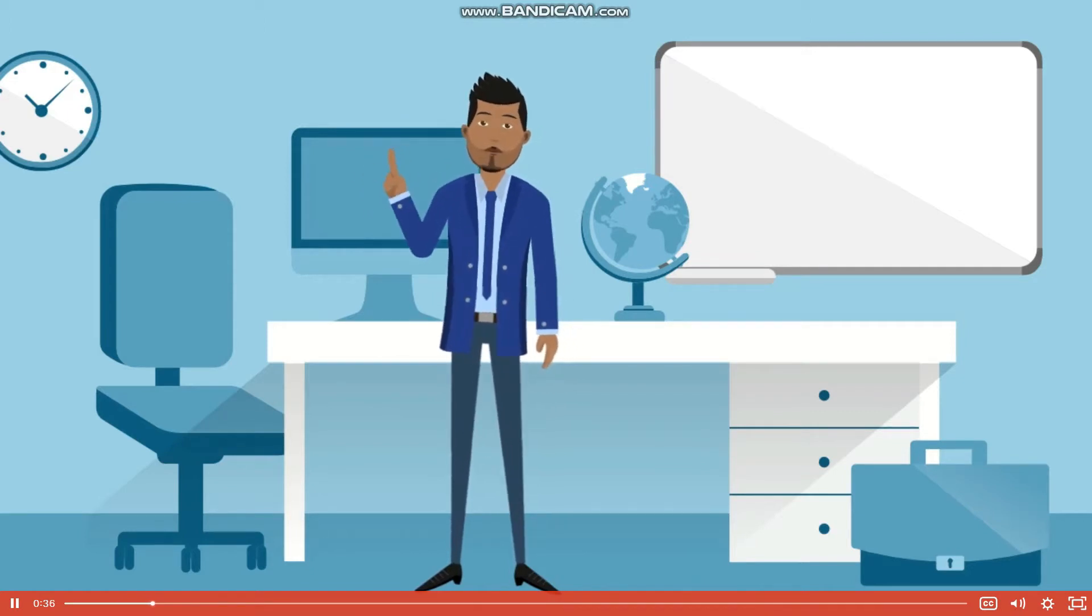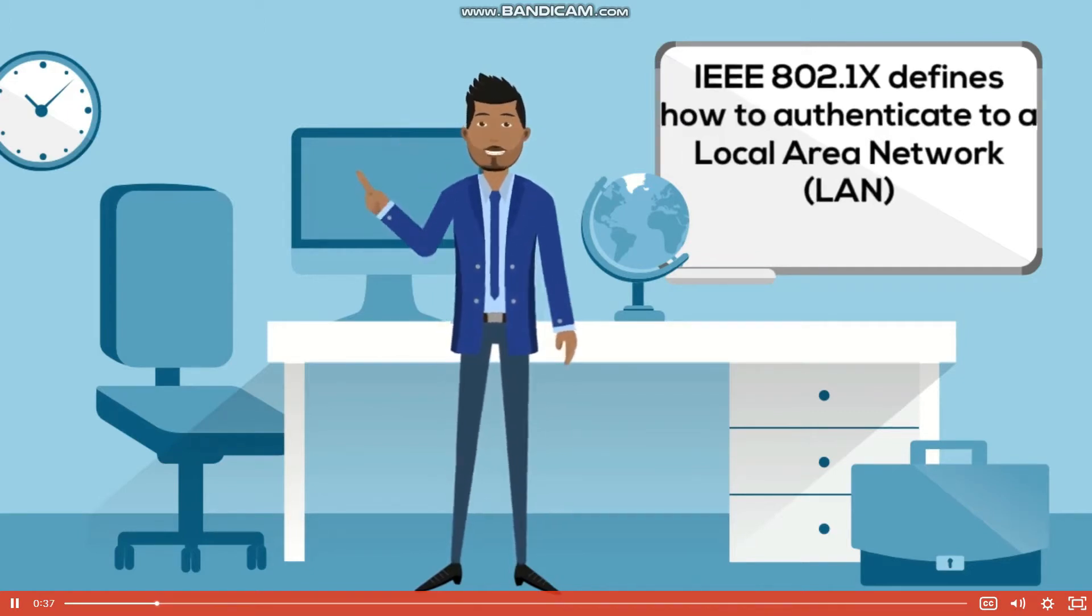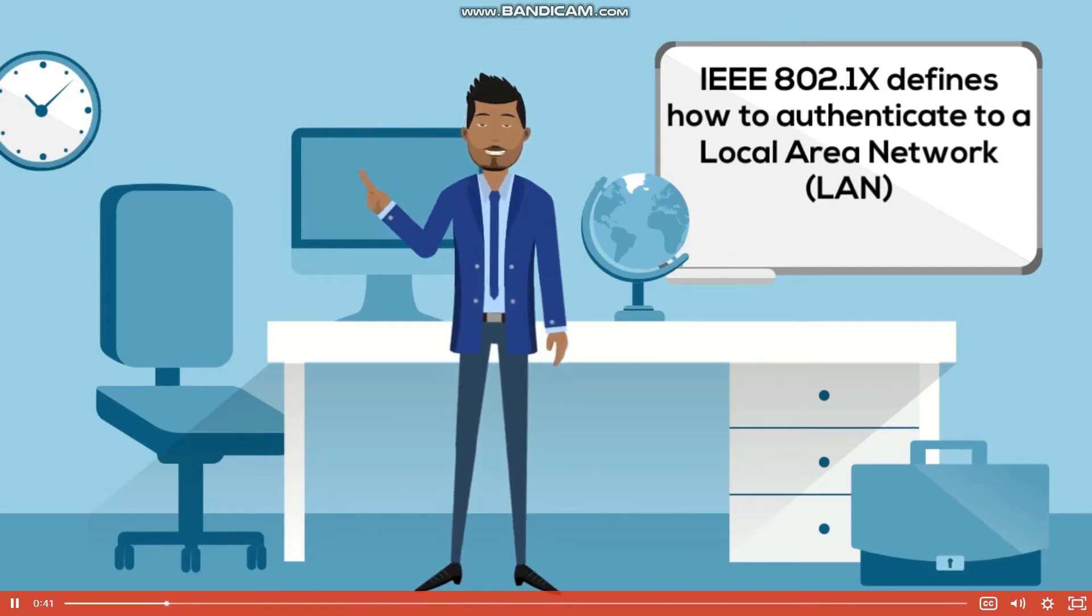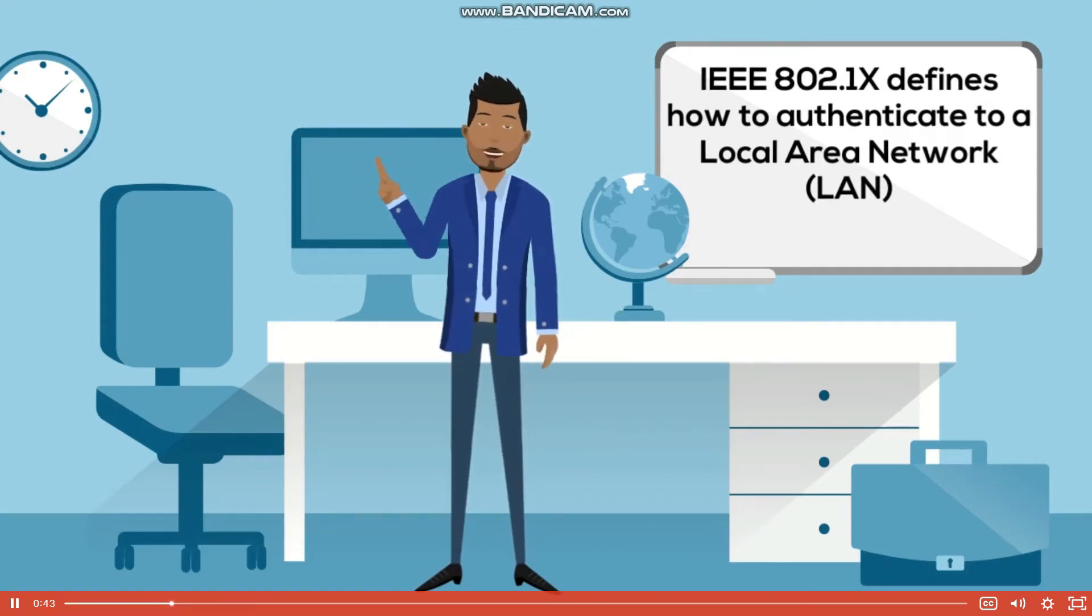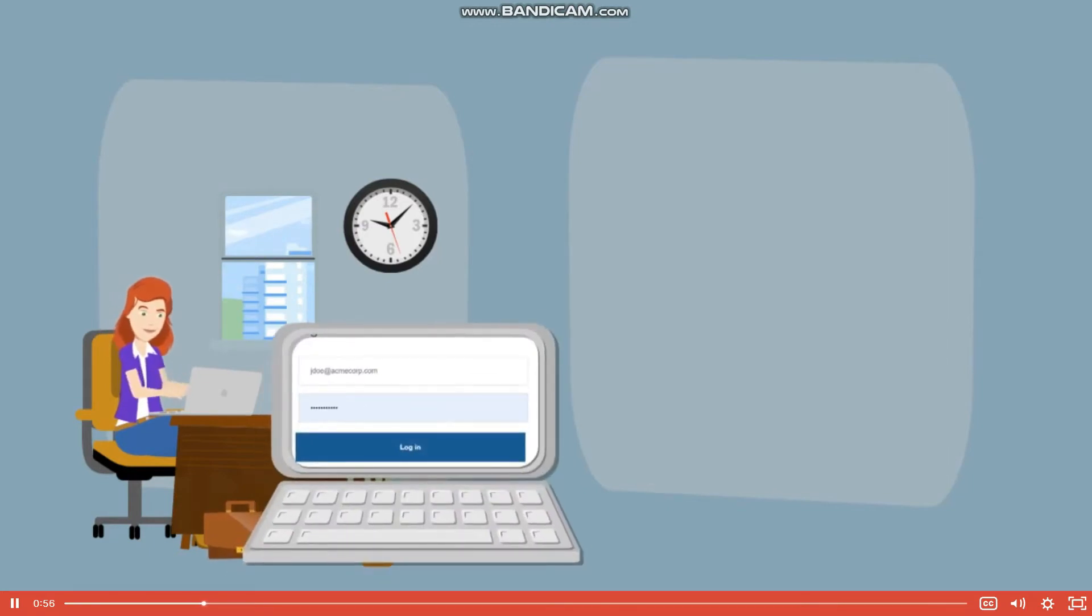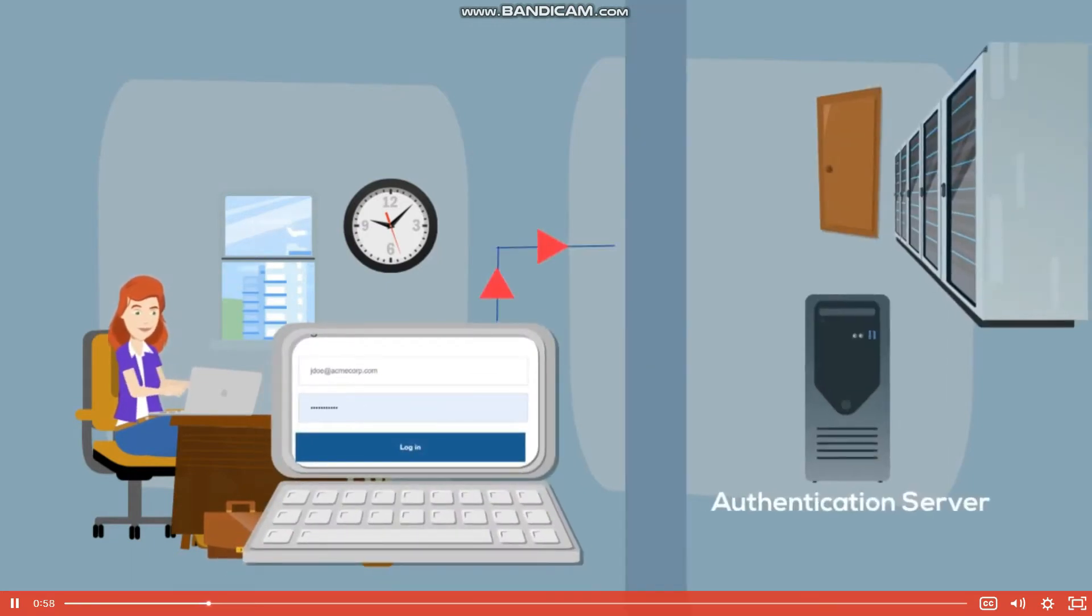Traditional authentication to the network followed the IEEE 802.1X standard that provided an authentication method to devices wishing to join a local area network, LAN, or wireless LAN. The mechanism was a port-based network access control, which used agents, the software running on client devices that provides credentials to the authenticator, to control access to the network.